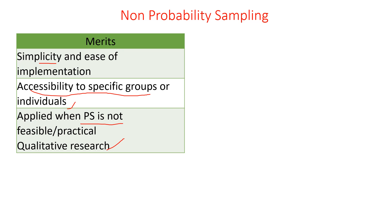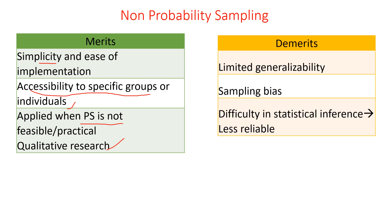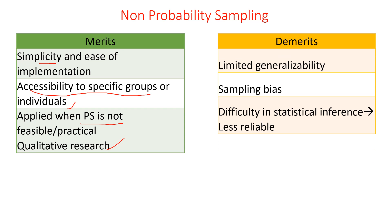You can refer back to previous lessons if you want to know about the types of research. Moving to the demerits of non-probability sampling: limited generalizability is one disadvantage, and the other is sampling bias. Because there is no randomization principle and there is subjective judgment by the researcher, there is inclusion or exclusion error. It is thus difficult to have statistical inference, and findings from non-probability sampling are less reliable than those of probability sampling.